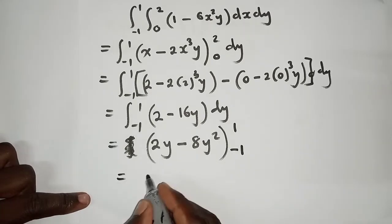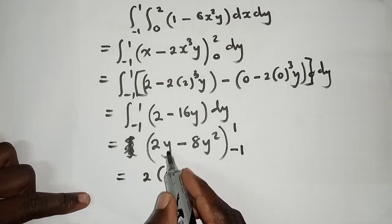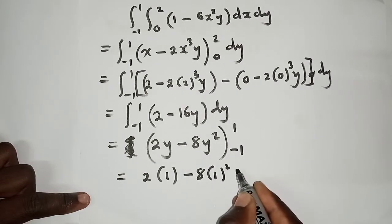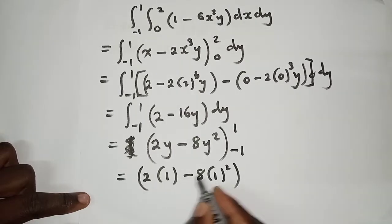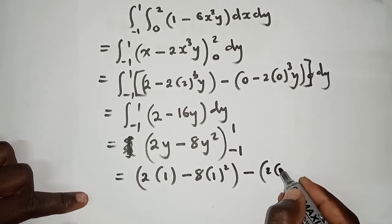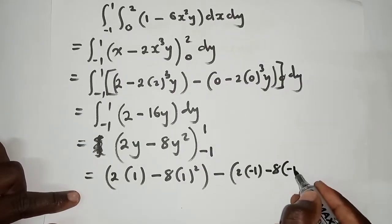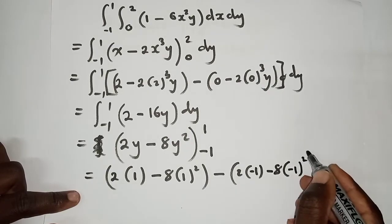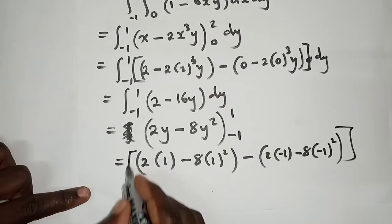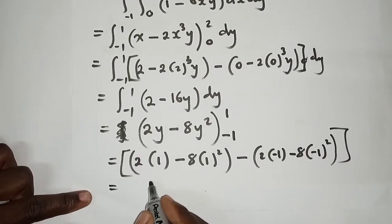We put the limits, we have 1 up there and negative 1 down. So here it will be 2 open brackets 1 in between here, 8(1)² - this is for the upper limit. For the lower limit we have negative 1 here, minus 8 multiplied by negative 1 squared.